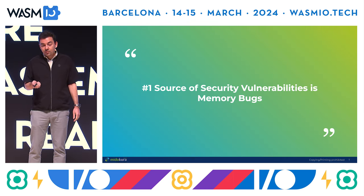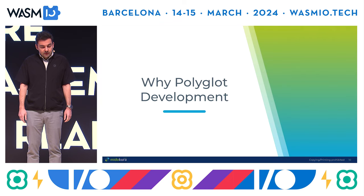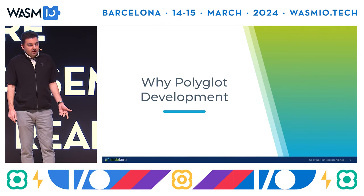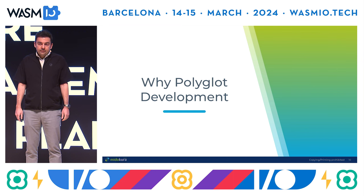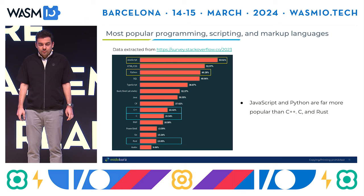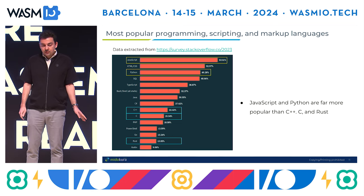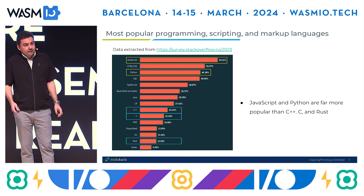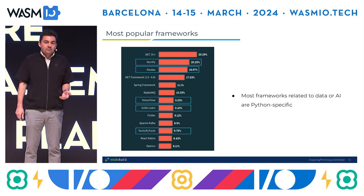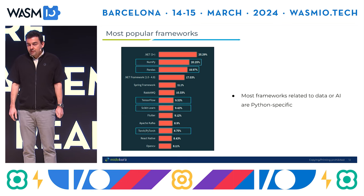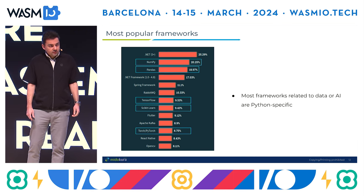The number one source of security vulnerabilities is memory bugs, and that's certainly one thing that WASM helps us with. Then we get into this polyglot development thing. Typically all the development is in C in these environments, but we would like to enable other languages. The most popular programming languages in general are not C, C++, and Rust. At the top we have things like JavaScript and Python. We do computer vision and AI, and Python is the language that everybody uses in that area on the server side for training. So we wanted to see if we can enable some of the same functionality on the inference side on device with Python.